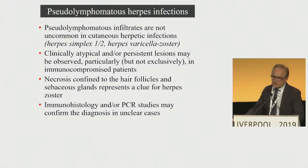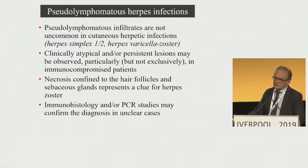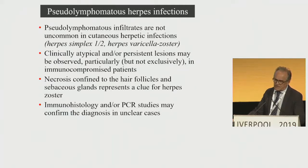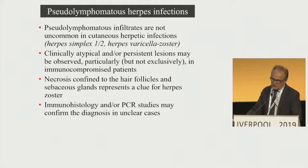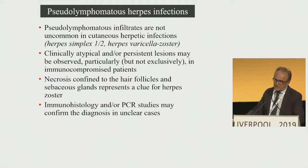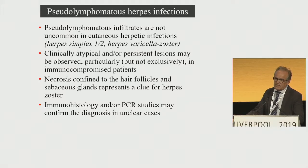This so-called pseudolymphomatous herpes infection has been described in herpes simplex 1, herpes simplex 2, and varicella zoster. Clinically the diagnosis is also difficult because you don't see blisters or vesicles — you see hyperkeratotic lesions, and the clinical diagnosis is often viral wart or epidermal proliferation. This is more frequent in immunosuppressed patients, particularly HIV-positive patients. Diagnosis can be confirmed by PCR. Immunohistochemistry is positive in more recent lesions (less than four weeks); after that, PCR is more sensitive to confirm the presence of herpes DNA.